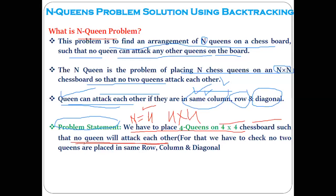In order to reach the solution where no two queens attack each other, we have to place the queens such that in the final setup there are no queens attacking each other. Every time when we are placing a queen, we have to check that no two queens are placed in the same row, same column, and the same diagonal.